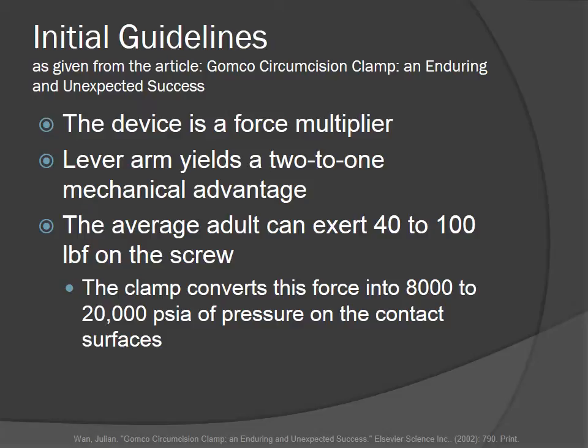The force on the screw in the lever arm produces a resulting force which is about 200 times the initial input force from the screw. The clamp converts this force into 8,000 to 20,000 pounds pressure on the contact surface between the bell and the base plate.